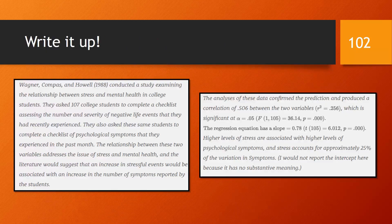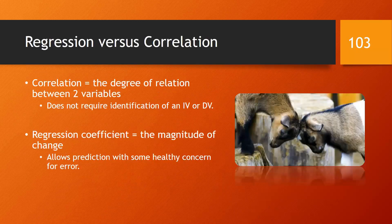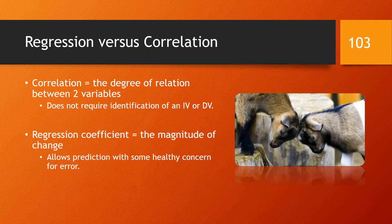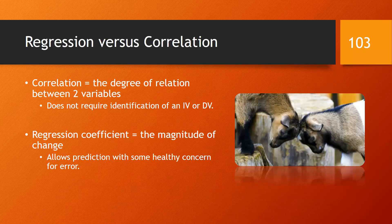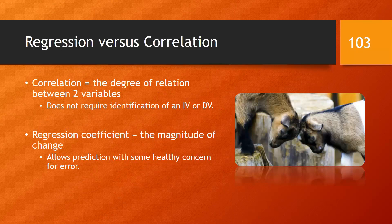As we've seen before, we need to concisely but comprehensively explain our findings. The write-up of a regression analysis is similar to what we've done before. We would leave out the intercept because it has no substantial meaning. Finally, let's reflect on the difference between regression and correlation. Correlation is the degree of relationship between two variables and does not require identification of an independent variable or dependent variable. In a regression, a regression coefficient is the magnitude of change we expect. This allows prediction with a healthy concern for error.